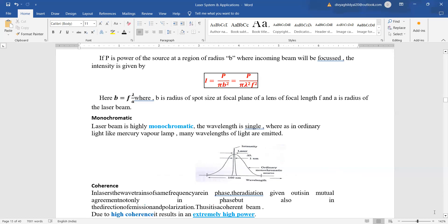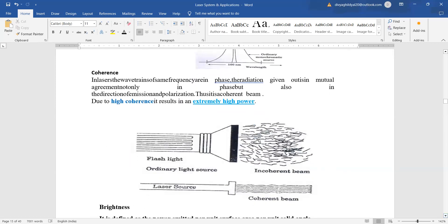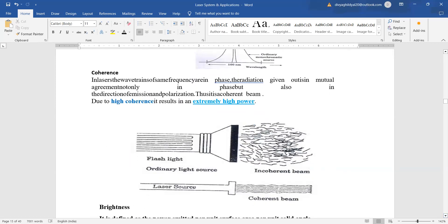Coherence, that means this is a very important property of laser beam. Laser beams, see ordinary light source here and the incoherent beam and here you can see laser source giving you a coherent beam. You can see it is clear in this diagram only that in lasers the wave train of same frequency are in phase relationship with each other and in ordinary light they are not in phase and due to high coherence it is going to result in an extremely high power.